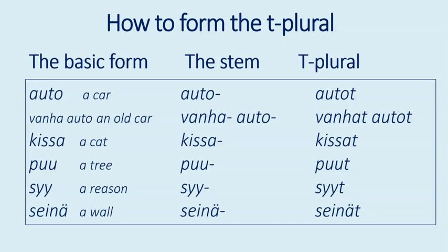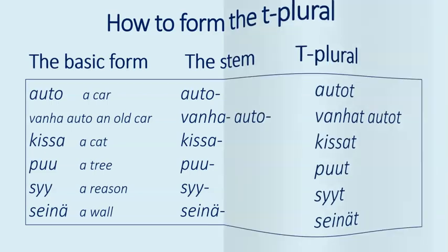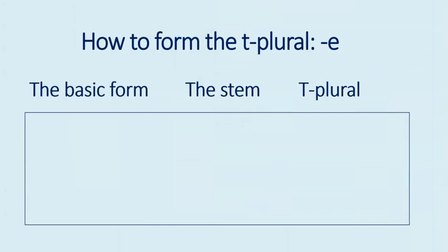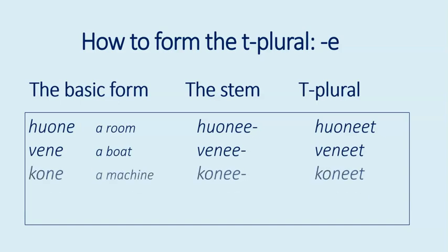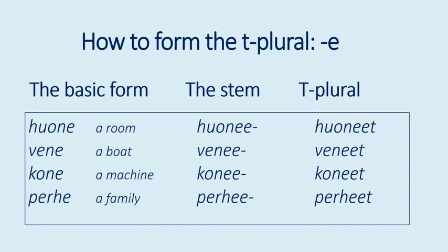However, adding a case ending often causes changes to the stem of the word. Let's see what kind of changes happen when we add the T. First, words ending in the letter E: for example, huone — a room. The stem is huonee, so we add one extra E and then the T plural marker: huone, huoneet. More examples: vene, veneet; kone, koneet; perhe, perheet.